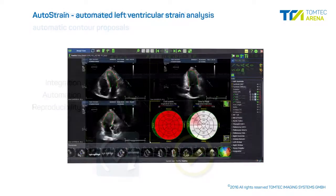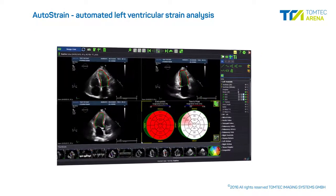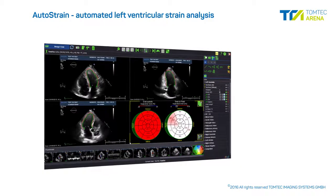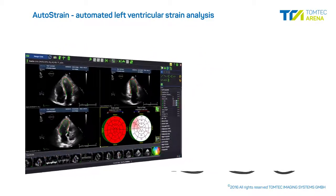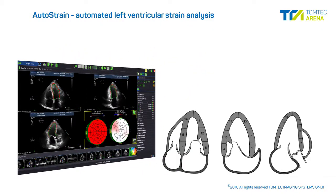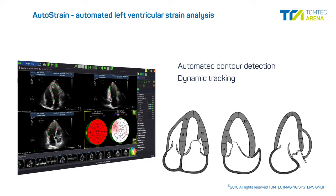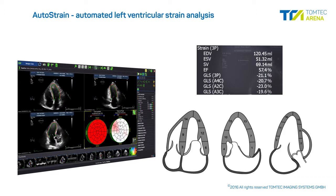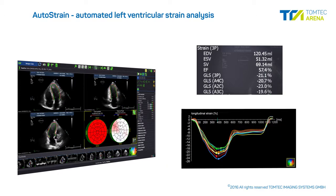The AutoStrain module offers a state-of-the-art automated left ventricular strain analysis for up to three apical long axis views. Automated contour detection combined with dynamic tracking delivers accurate and highly reproducible global and regional LV function measurements. Analysis results are readily available in a variety of displays.